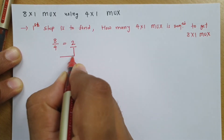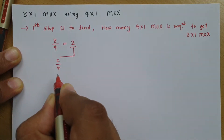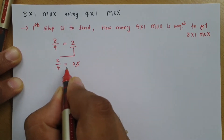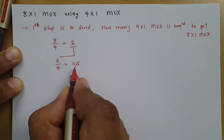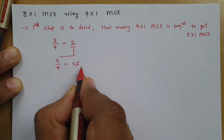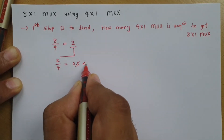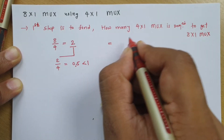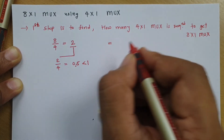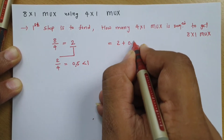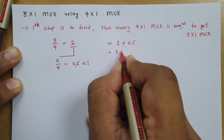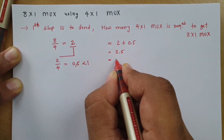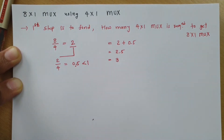Now we need to repeat this division. So 2 divided by 4 is 0.5. We need to repeat this division until our result is 1 or less than 1. Here 0.5 is less than 1, so the total 4x1 mux required to get an 8x1 mux is 2 plus 0.5, which is 2.5. Since you cannot use 2.5 mux, you will have to use 3 mux.